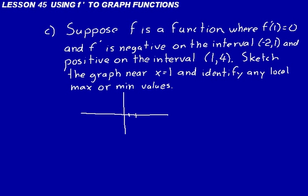So let's graph this. We don't really need to worry about y values, just x values. We know that we have a slope of 0 when x equals 1. And then f prime is negative on the interval from minus 2 to 1. So we know we'll be coming down to 0.